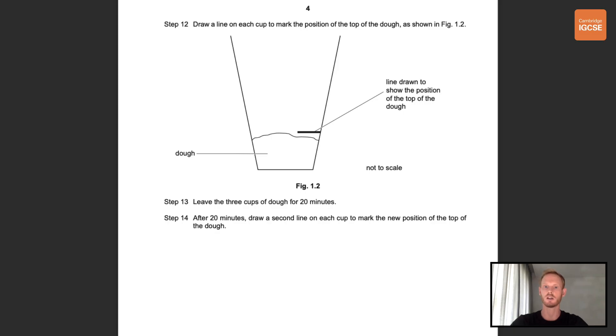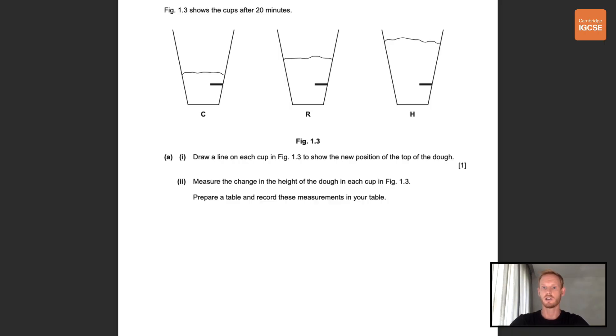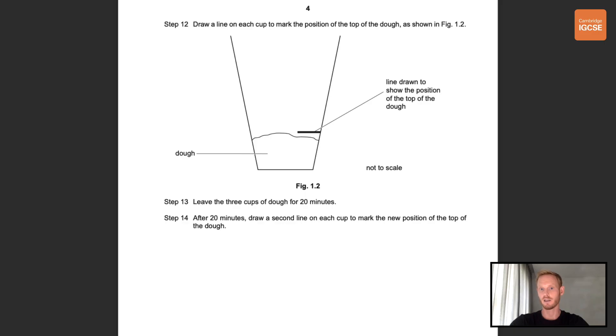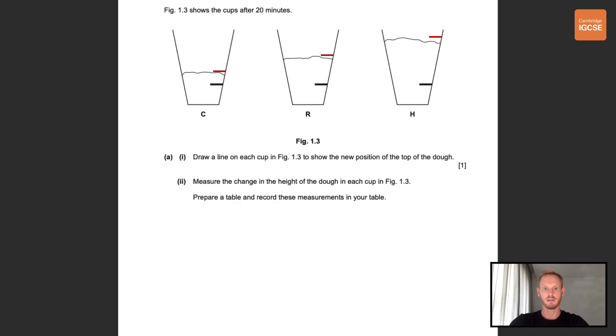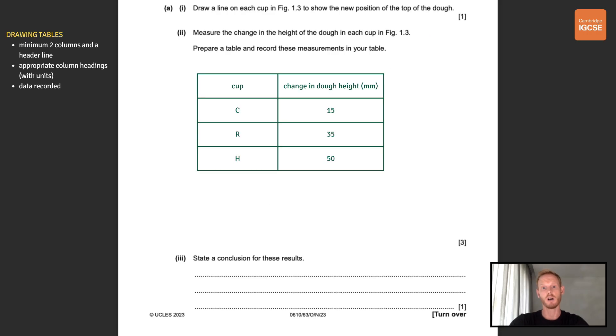Now at this point it should already be evident what the experiment is about, and the results we should expect to find. We are varying temperature and measuring how far the dough rises, which is of course indicative of rate of respiration in yeast. In your exam, make sure to take your time here and really understand the experiment before diving into the questions. So the first thing that you need to do is to draw a line on each cup in figure 1.3 to show the new position of the top of the dough. Now if we look back to the previous diagram, we can see that the line drawn would make contact with the highest point of the dough if extended out, so we need to make sure that our lines are drawn in the same way.